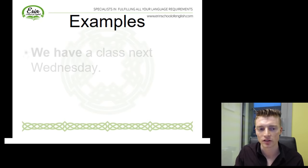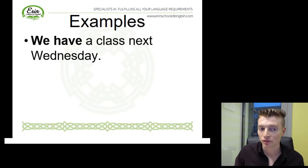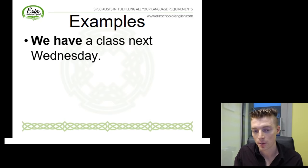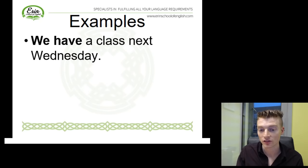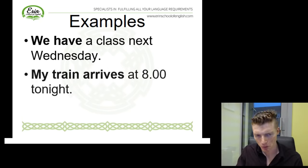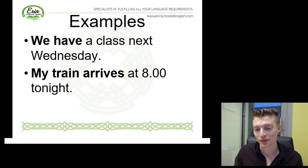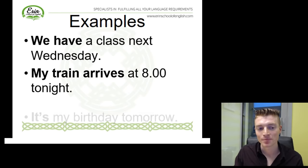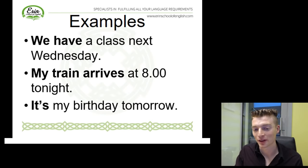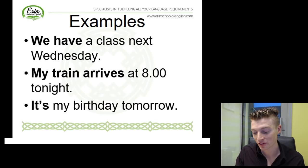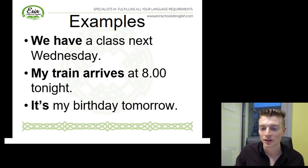Let's have a look at a few more examples. We have a class next Wednesday — the class is scheduled to happen next Wednesday. My train arrives at 8 tonight. And it is my birthday tomorrow. So these are all examples of how the present simple can actually be used to talk about the future in English.